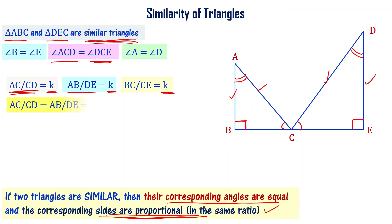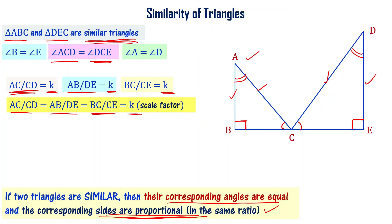Therefore, AC by CD equals AB by DE, which equals BC by CE, all equal to k. This constant k holds for the two similar triangles ABC and DEC.